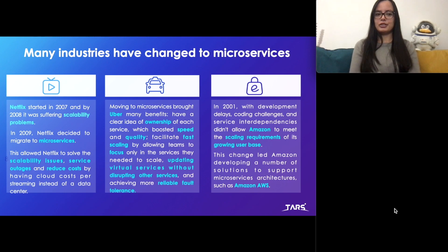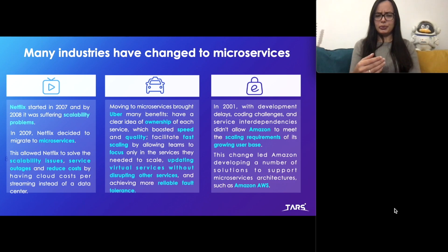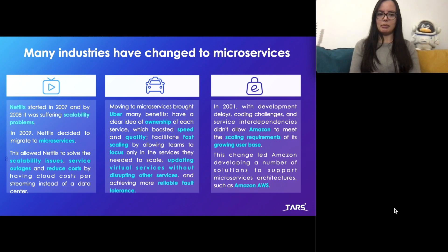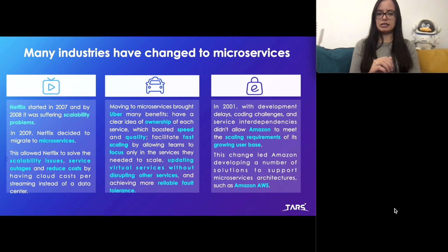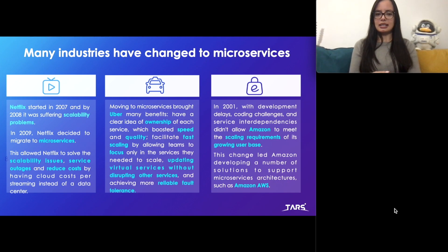Many industries have actually switched to microservices. The first example is Netflix — they started the company in 2007, and in 2008 as they grew, they experienced a major database corruption. For three days, at a time when they were working with DVDs, they could not ship DVDs to their members. They were suffering from serious scalability problems. So in 2009 they decided to move to microservices, which helped them achieve scalability, address service outages, and reduce costs, since moving to the cloud means paying by streaming instead of maintaining data centers.